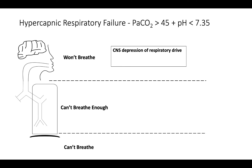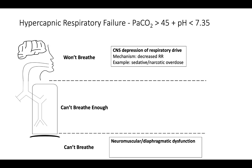'Won't breathe' represents central causes of hypercapnic respiratory failure — the mechanism is a decrease in respiratory rate, and the best examples are sedative and narcotic overdoses. 'Can't breathe' represents neuromuscular or diaphragmatic dysfunction, where the patient is unable to activate the muscles of the diaphragm and chest wall and therefore cannot expand the lungs for sufficient tidal volumes. Causes include Guillain-Barré, myasthenia gravis, botulism, and polio.